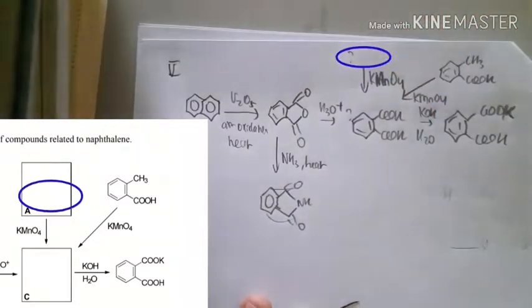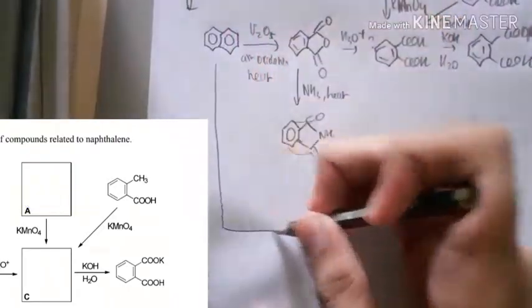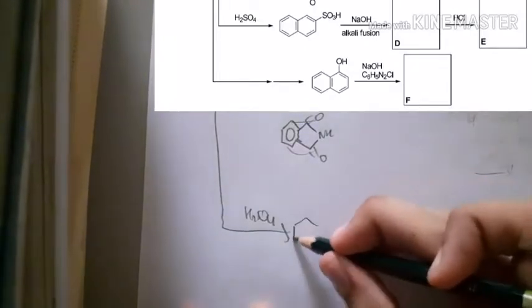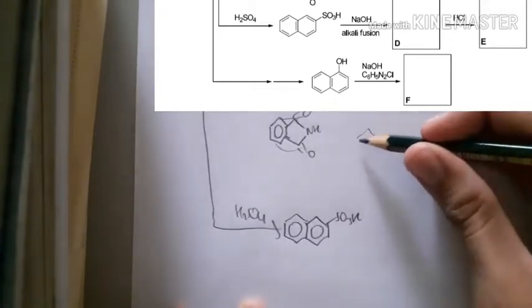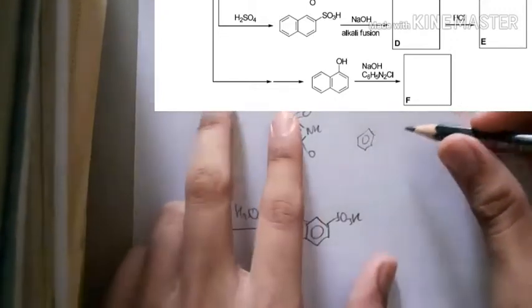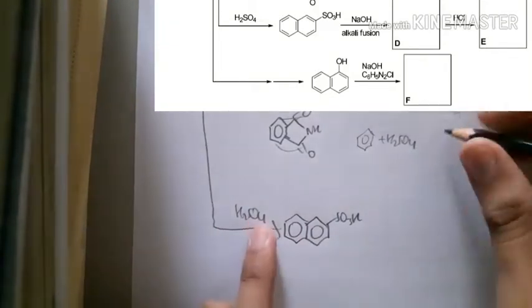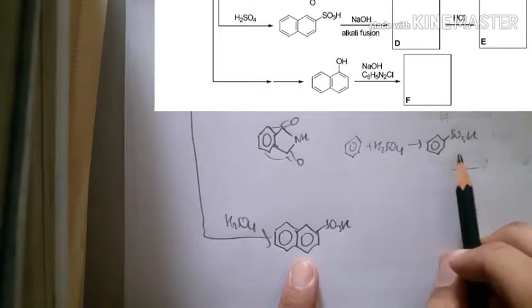Naphthalene when reacted with sulfuric acid is quite easy. If we have benzene instead of naphthalene and it's also reacted with H2SO4, it also turns to this one - benzene sulfonic acid. This is naphthalene sulfonic acid.